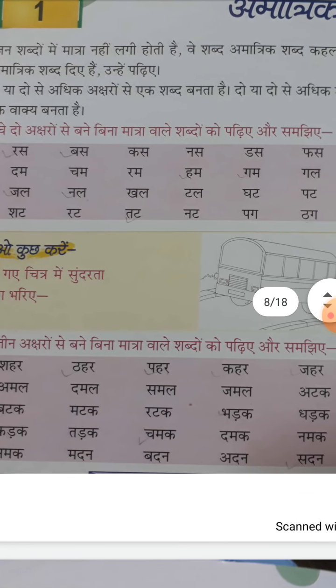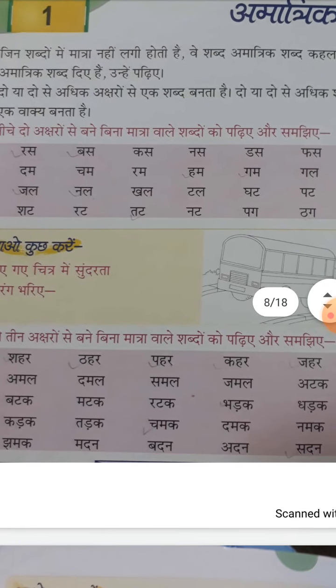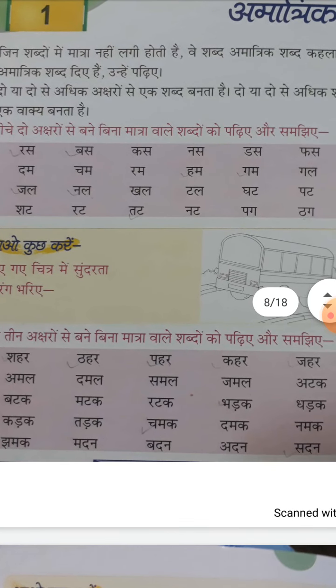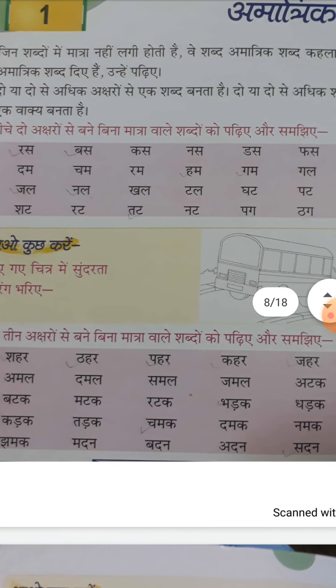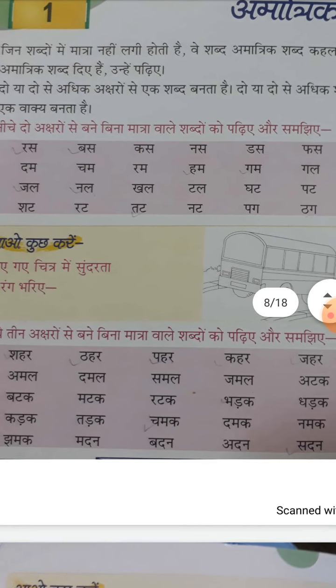नीचे देखिए — ये picture बनी है वैन की, बस की। जो भी है इसको दिये गए चित्र में सुन्दर रंग भरिए। आप लोग इसको color कर लीजेगा। ठीक है?